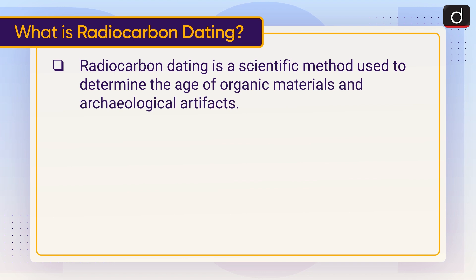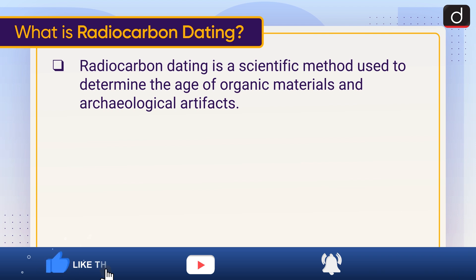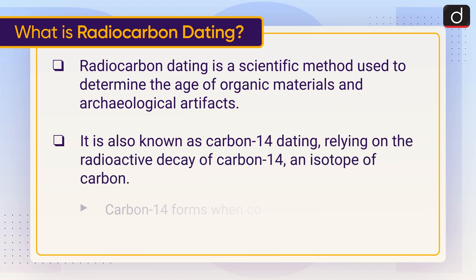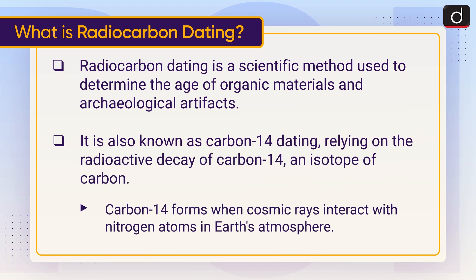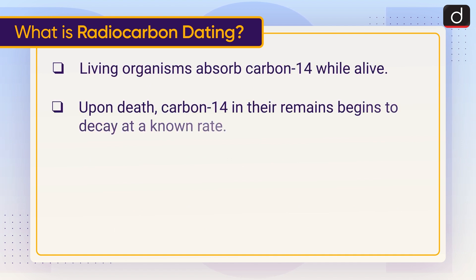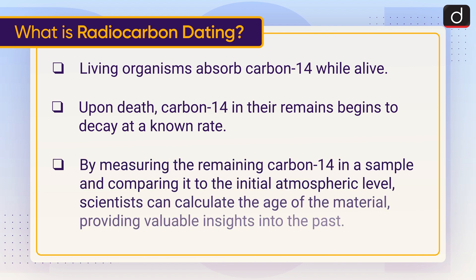Radiocarbon dating is a scientific method used to determine the age of organic materials and archaeological artifacts, also known as carbon-14 dating. It relies on the radioactive decay of carbon-14, an isotope of carbon. Carbon-14 forms when cosmic rays interact with nitrogen atoms in Earth's atmosphere. Living organisms absorb carbon-14 while alive; upon death, carbon-14 in their remains begins to decay at a known rate. By measuring the remaining carbon-14 in a sample and comparing it to the initial atmospheric level, scientists can calculate the age of the material.